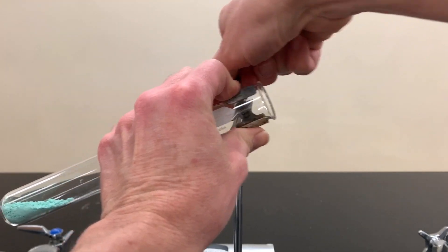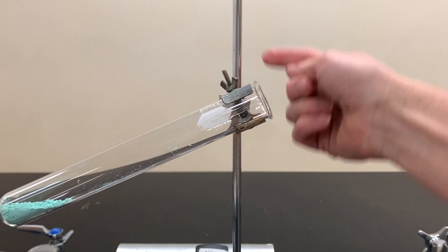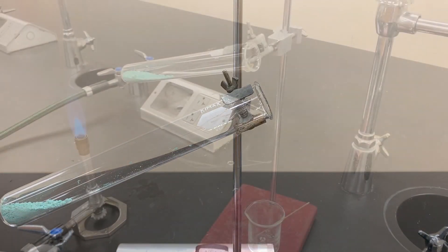You can also adjust the height at that point, and then we're going to be heating with the Bunsen burner gently underneath this area in the next step.